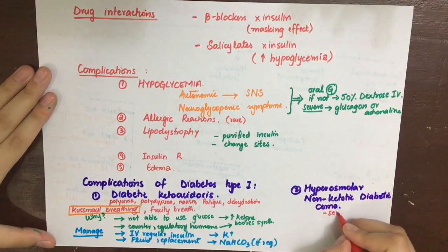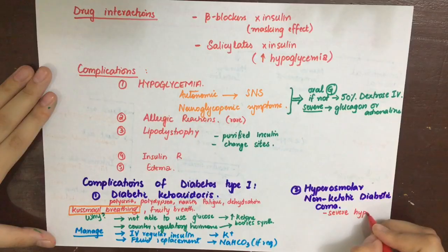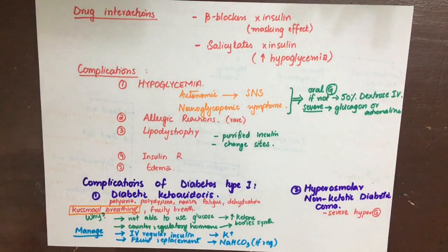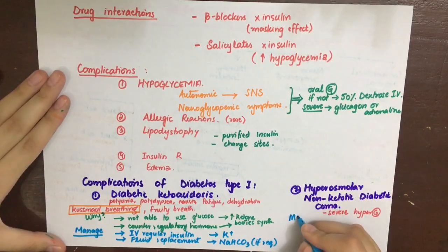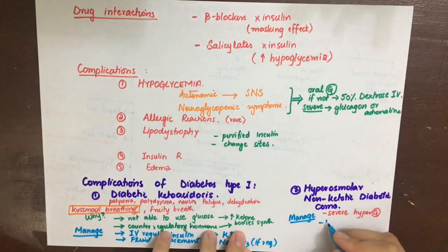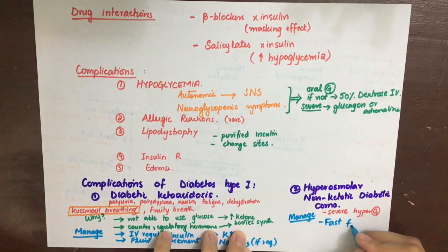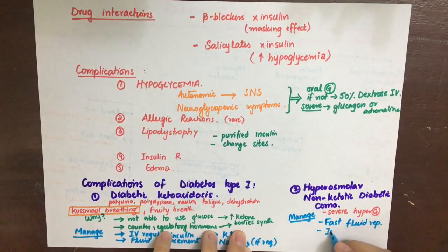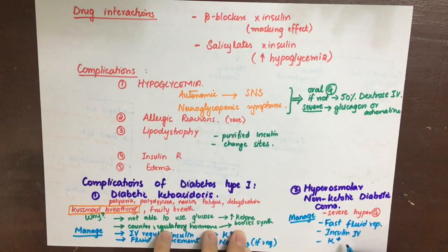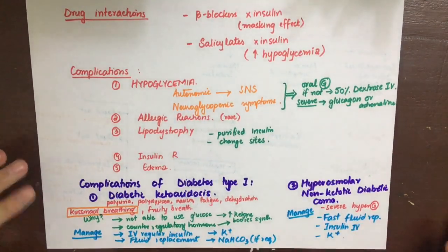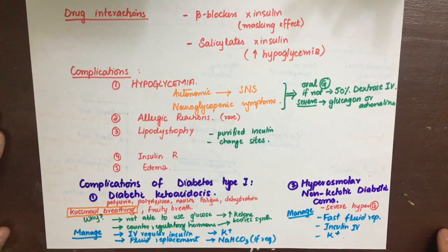The second complication is hyperosmolar non-ketotic diabetic coma, characterized by severe hyperglycemia and hyperosmolality leading to dehydration and associated symptoms. The chief therapy is to replace fluids as soon as possible and give IV insulin and potassium, just as in diabetic ketoacidosis. Despite intensive therapy, there is unfortunately a high mortality rate of about 50% in this case. That's all about insulin therapy and type 1 diabetes.